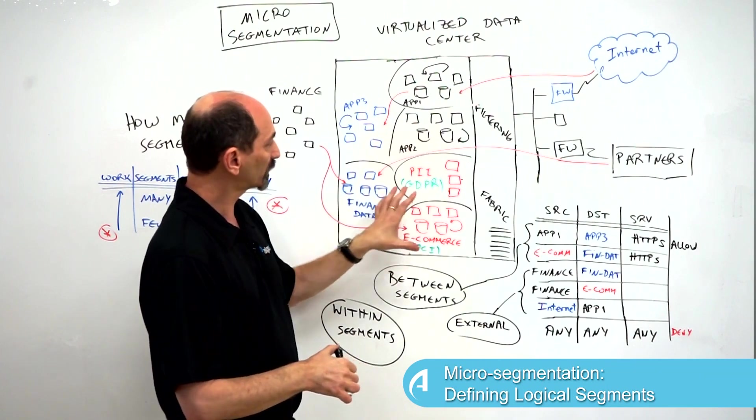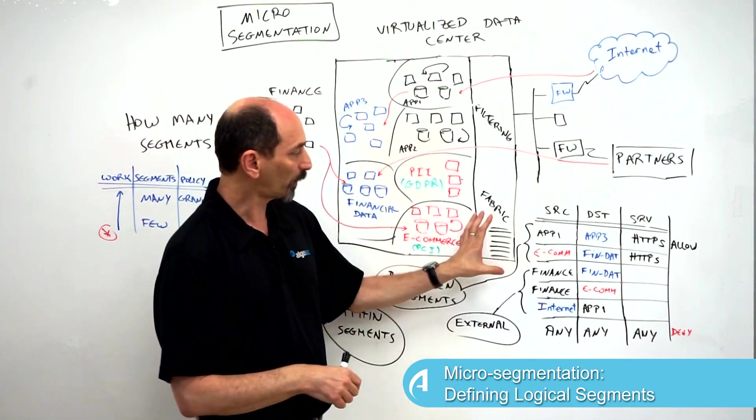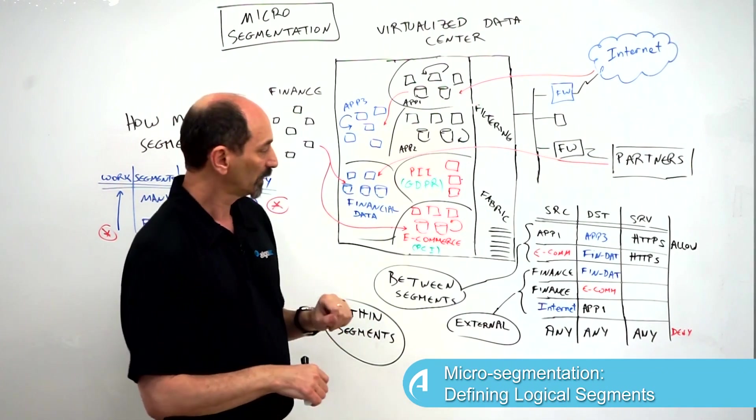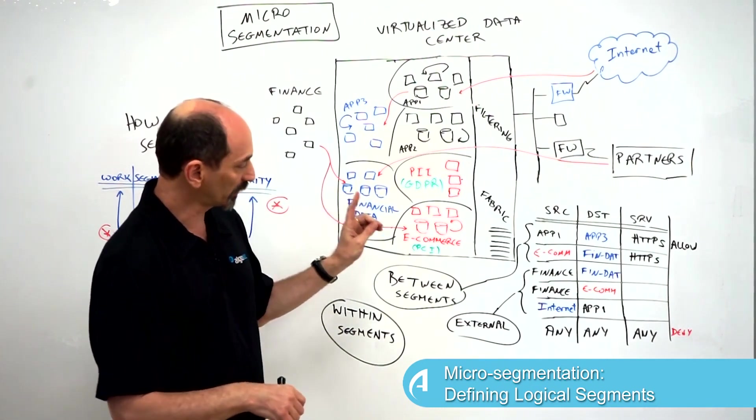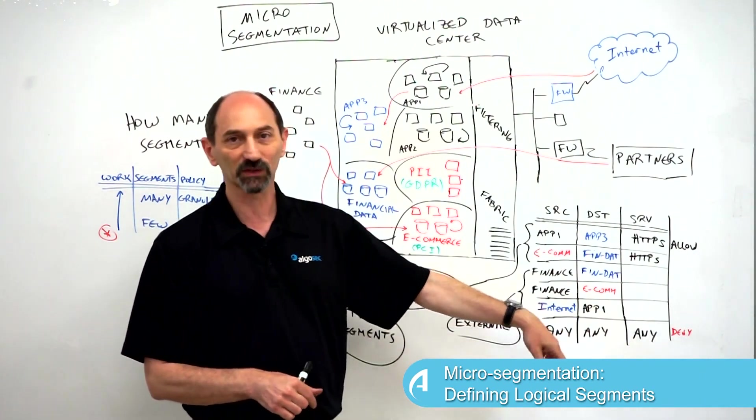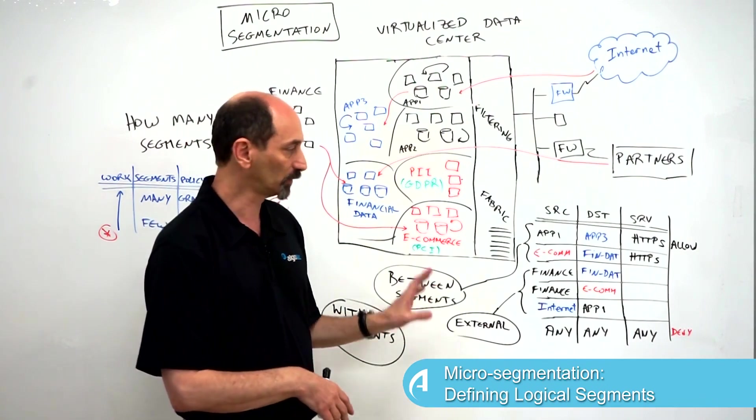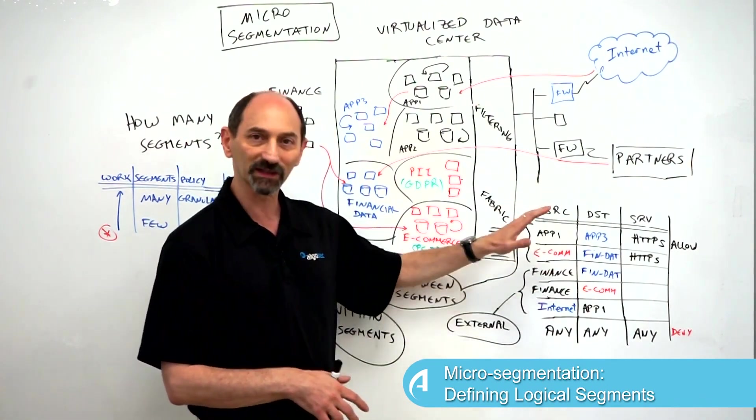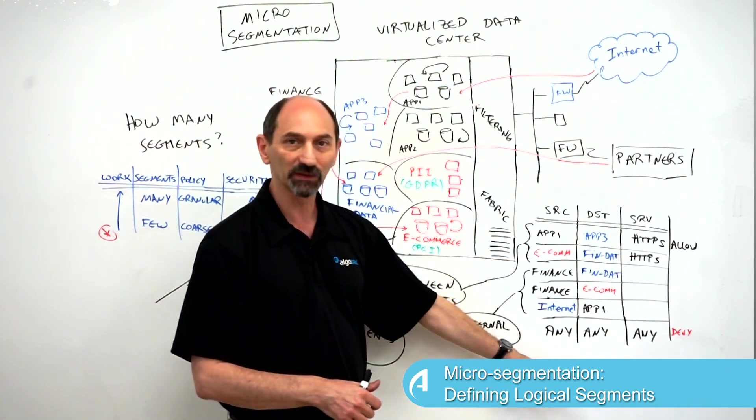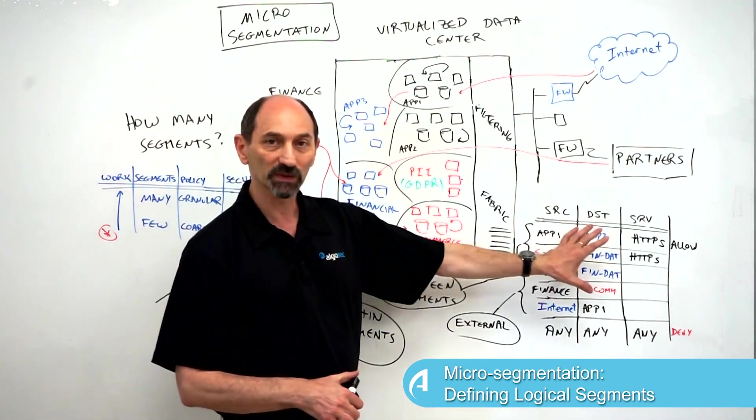Once we've decided what the segments are going to look like, that drives what the policy is going to be when we introduce it into the fabric. The first thing to remember is that the last rule on the policy must be from anywhere to anywhere with any service deny. Otherwise we're still allowing all traffic and that's not good. Our goal is to have a policy that allows all the traffic we actually want to support and then have a default policy saying everything else no.